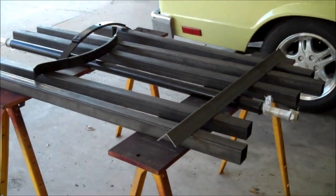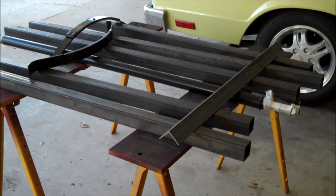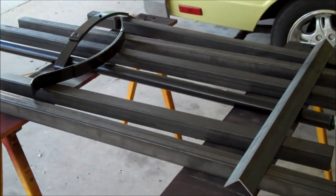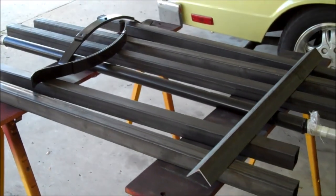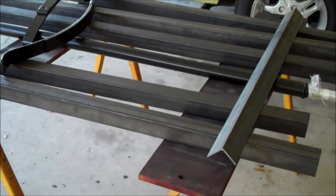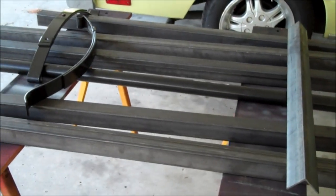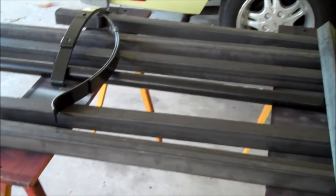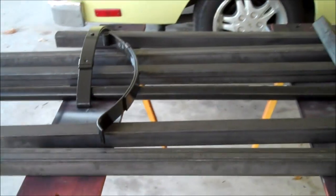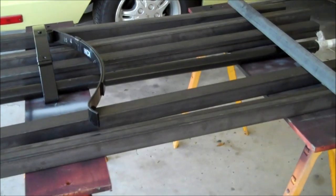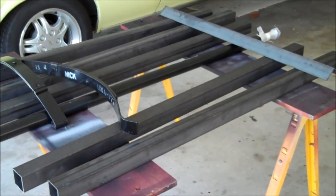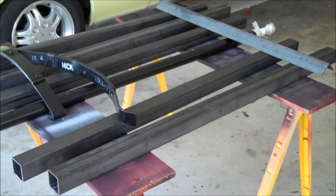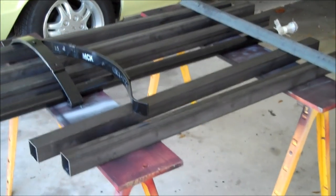This is a bunch of 2x2x120 square tube hot rolled steel. Upstairs in the logistic staging area, also known as the second bedroom, there are more parts and pieces.